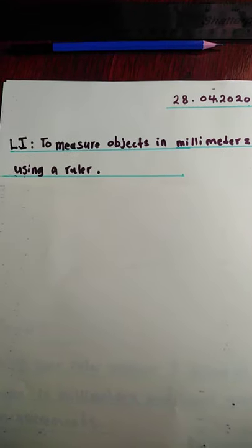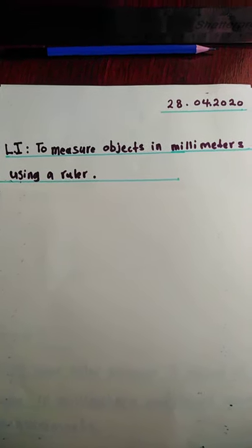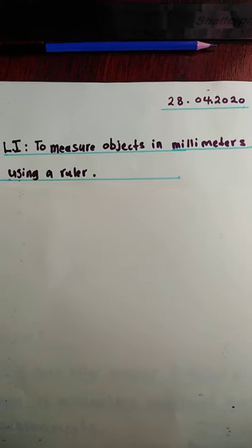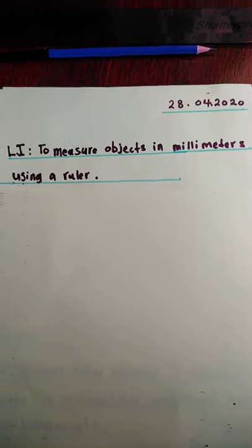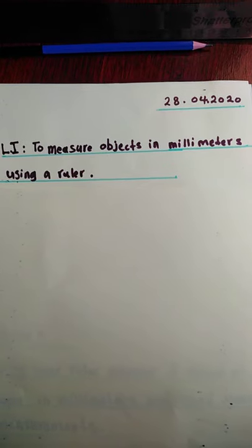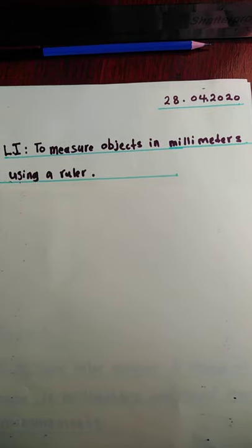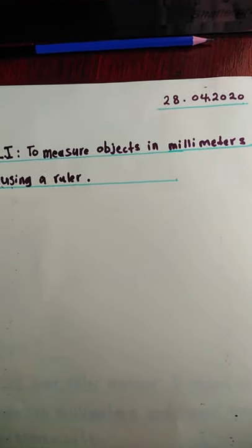You need to write the date on the right side in your piece of paper. You will also need to write your LI. Pause the video to write your LI: to measure objects in millimeters using a ruler.